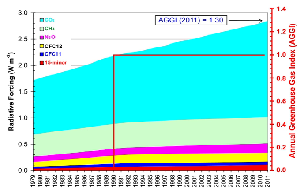Greenhouse gases can be removed from the atmosphere by various processes: a physical change, such as condensation and precipitation removing water vapor; a chemical reaction within the atmosphere, such as methane being oxidized by reaction with naturally occurring hydroxyl radical OH and degraded to CO2 and water vapor; other chemical reactions including solution and solid phase chemistry occurring in atmospheric aerosols; and a physical exchange between the atmosphere and other compartments of the planet, such as the mixing of atmospheric gases into the oceans.